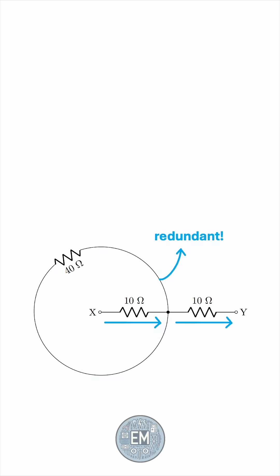If you're not convinced, then we can redraw this circuit like this. It's electrically equivalent. The 40-ohm path can be drawn as a circle, as a rectangle, as a triangle. For all we care, this is electrically equivalent.